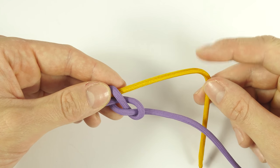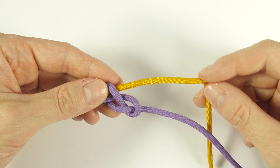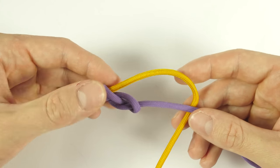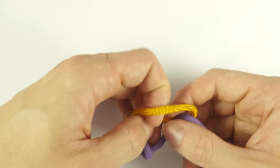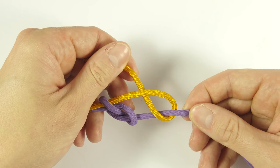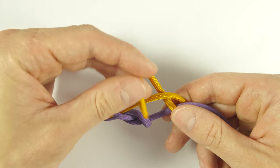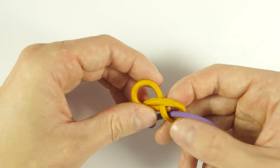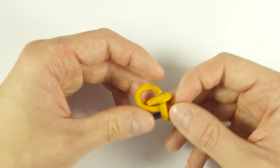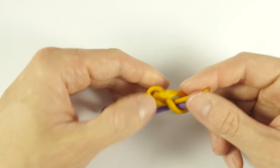Then use this second end to tie another figure 8 knot. So first a loop, like this, then pass over the standing end, then under and through the loop. And we have a second figure 8 knot.